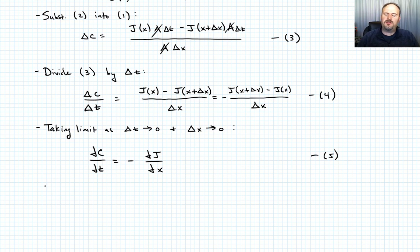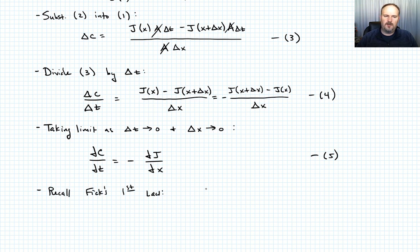Now let's go back and recall Fick's First Law, which says J equals negative D times del C over del x. Call that Equation 6.